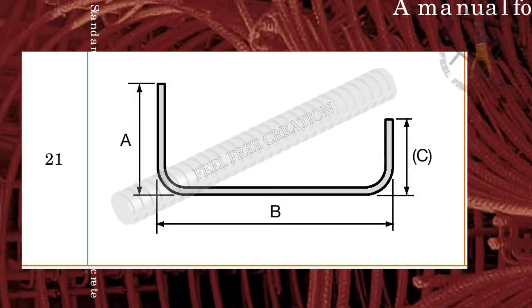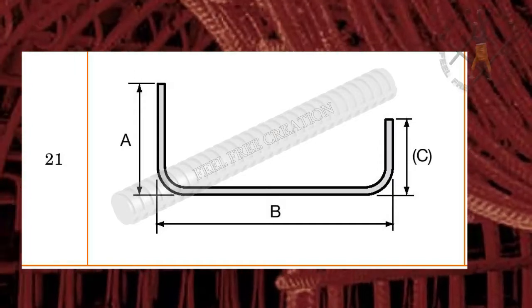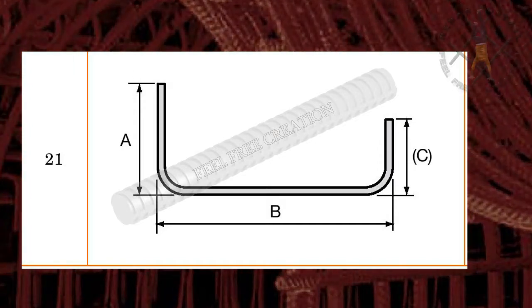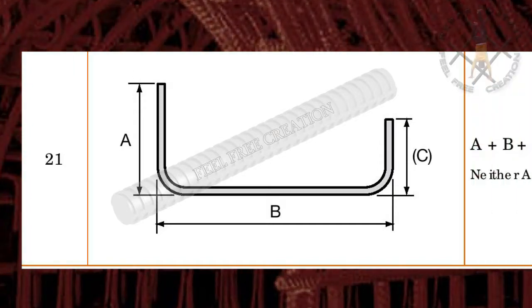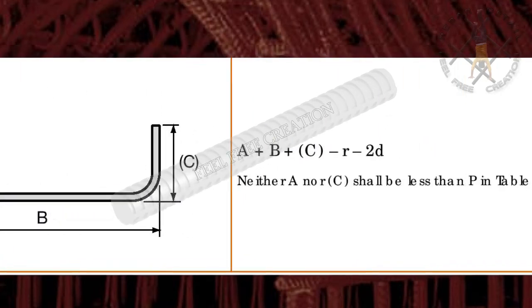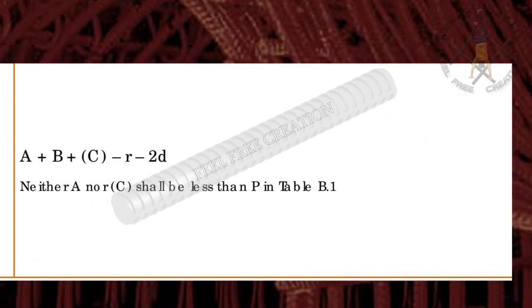Shape code 21. This bar has two 90-degree bends, hence its shape name starts with 2. Total length equals A plus B plus C, minus bending radius minus 2 times of D.